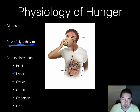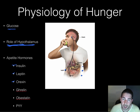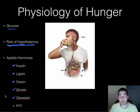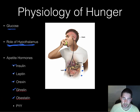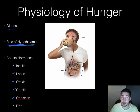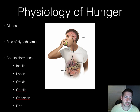Ghrelin is a hormone from your empty stomach that sends the signal saying 'I'm hungry.' Obestatin is also secreted from the stomach and says 'I'm full.' Finally, PYY comes from your digestive tract — when the digestive tract is full, it signals that you're not hungry. So sometimes you haven't eaten in a while but still don't feel hungry — that would be PYY at work.